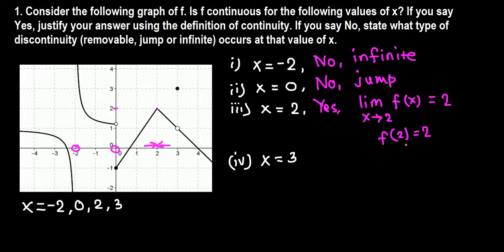Finally, at x equals 3, there's a hole, so obviously discontinuous. In this case, the limit exists—when x comes to 3 from either side, the limit value is 1, but the function value when x is exactly 3 is 3. Though the limit exists, the limit value of 1 is not equal to the function value of 3.